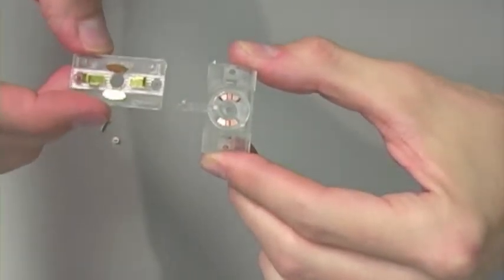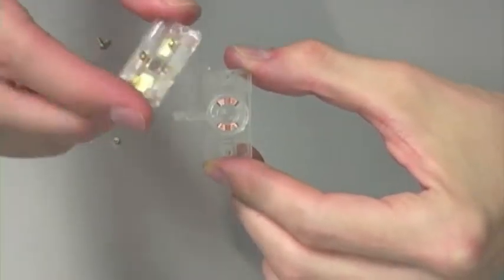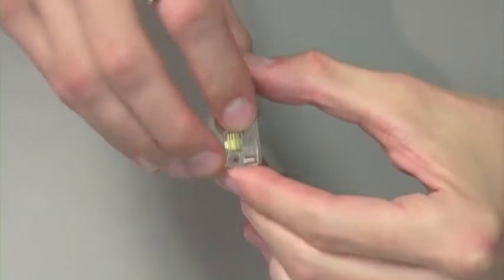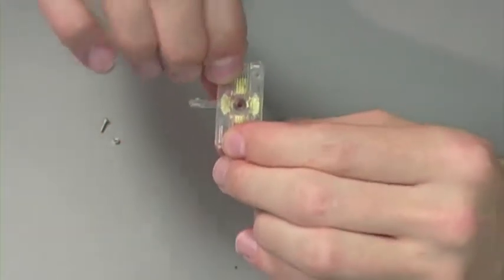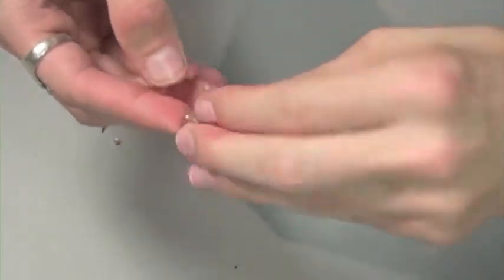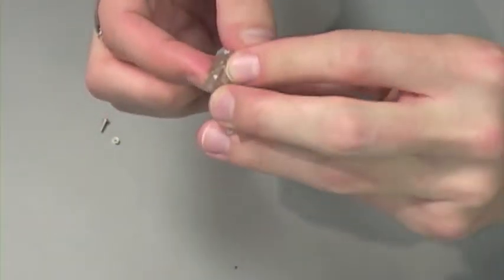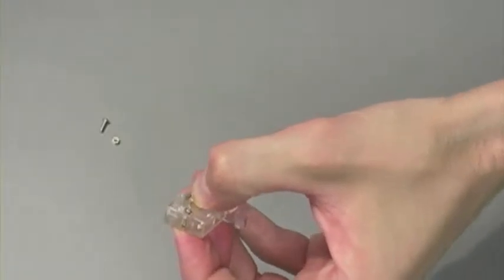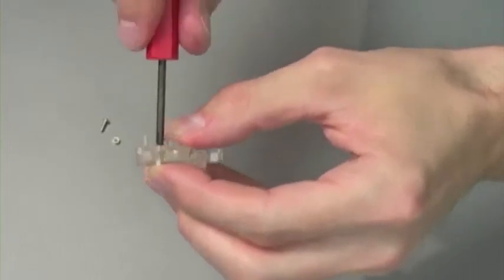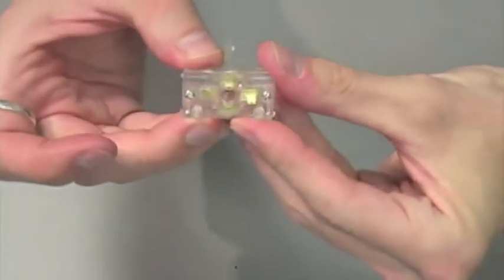Once all of your switch terminals are in position, it's time to put our pieces together. Secure the two halves together using the two-by-six screws and nuts. Step two complete.